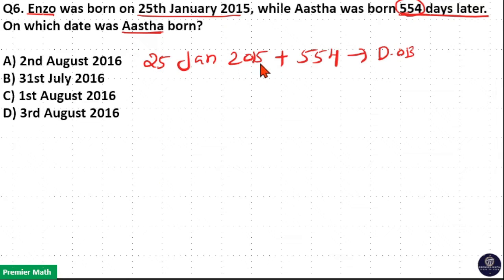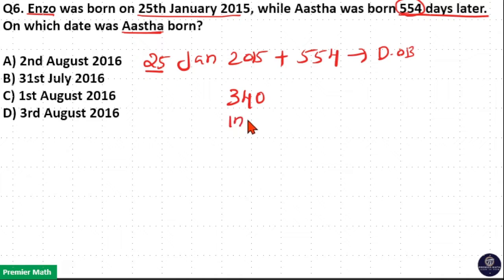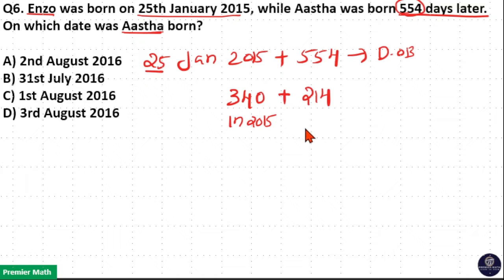2015 is a regular year which has 365 days, but 25 days are already gone. So 365 minus 25 is 340 days remaining in 2015. Out of the 554 days, 340 days are in 2015. So the remaining days are 554 minus 340, which is 214 days — and these 214 days are in 2016.